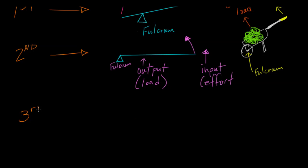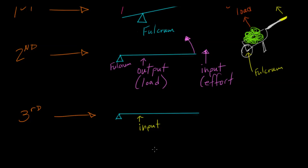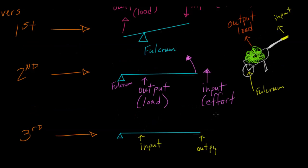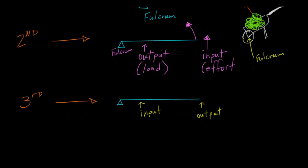Lastly we have the third class lever. For a third class, it's similar in that you have the fulcrum at the end, but now we're going to reverse the input and output force. For this one, we're going to have the input force next to the fulcrum, and the output will be at the far end.